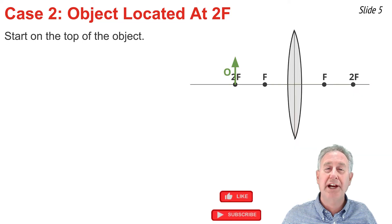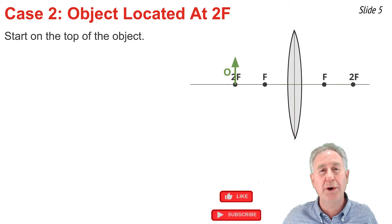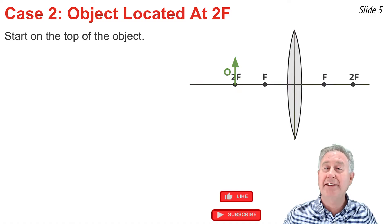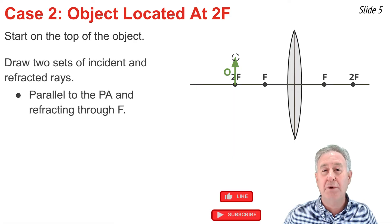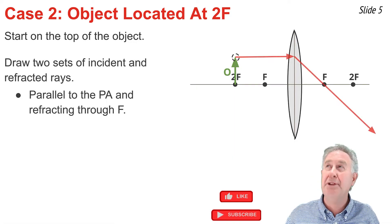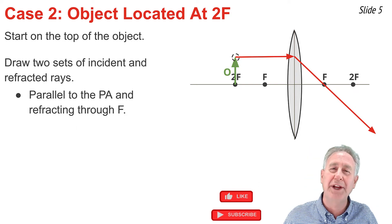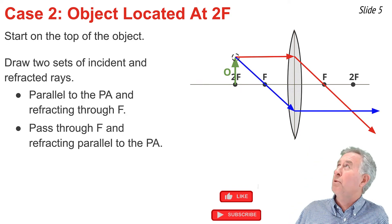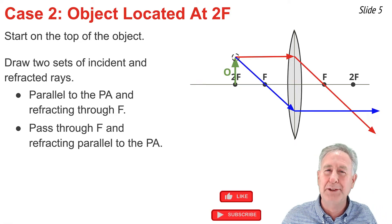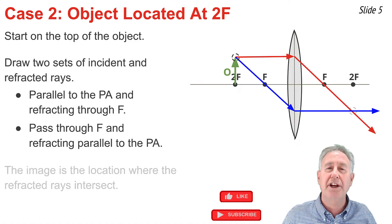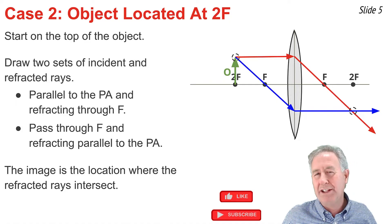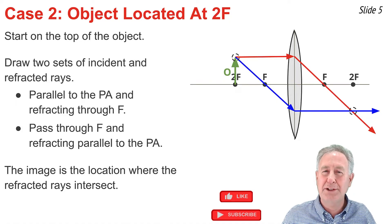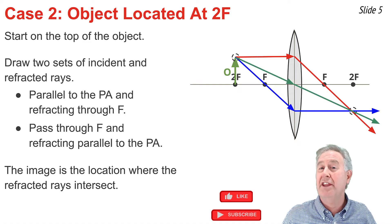In the second of four ray diagrams, the object is located at the 2F point. To draw the ray diagram, I begin with a point at the top of the object and draw at least two sets of incident and refracted rays. I draw the ray of light that travels parallel to the principal axis and refracts through the focal point, and I draw the ray of light that passes through the focal point on the way to the lens and refracts parallel to the principal axis. These two refracted rays intersect in a common location — the image of the top of the object. A third set of rays could be drawn and, not surprisingly, that third refracted ray intersects at the same location.